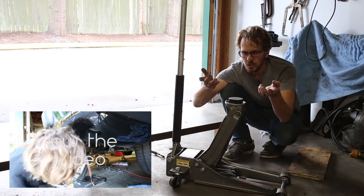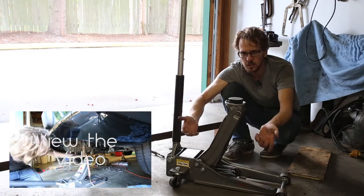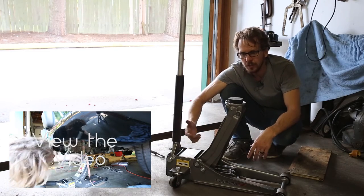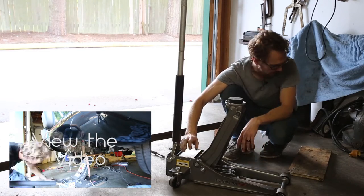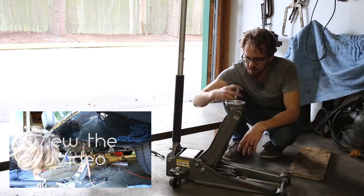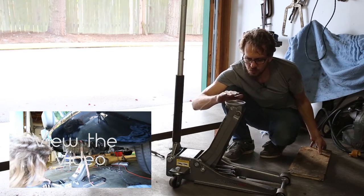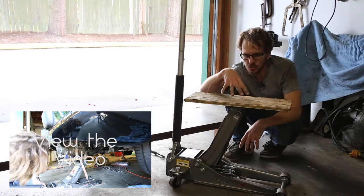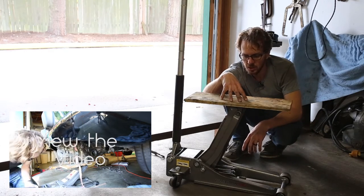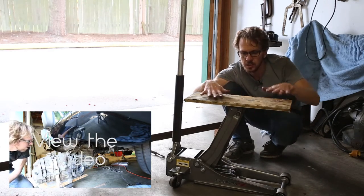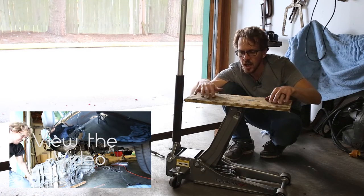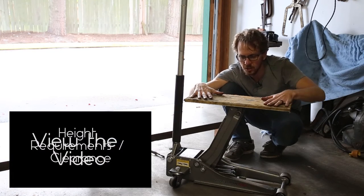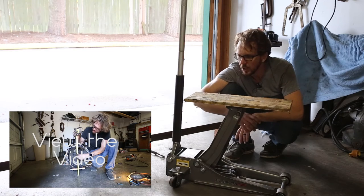They do make special transmission jacks to lower transmissions, but I found that that wasn't actually necessary. Instead what I did is I just removed this and I just bolted a board to the top of my jack to stabilize things and then I strapped the transmission onto this board. And that worked well.